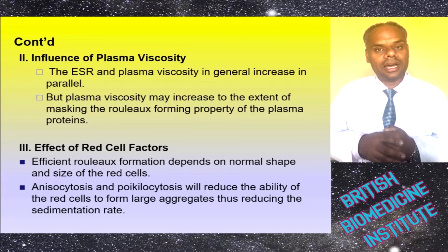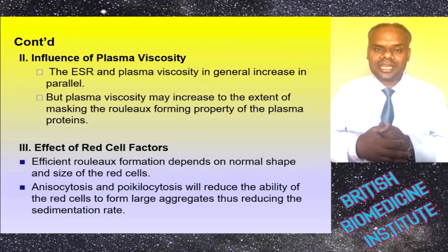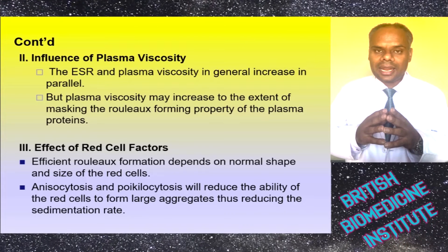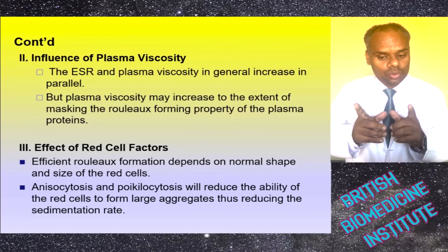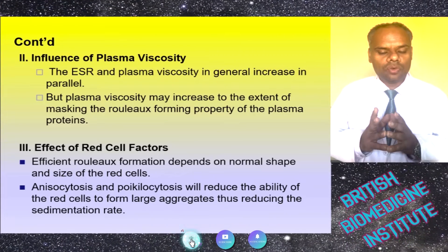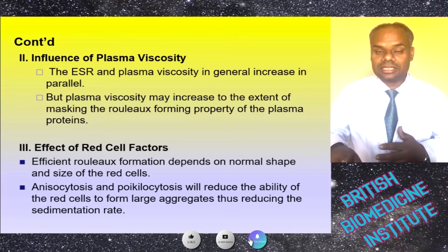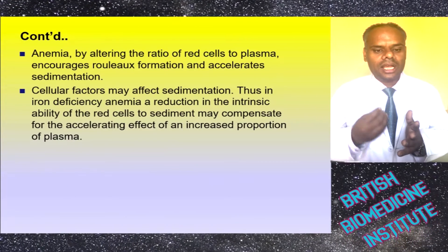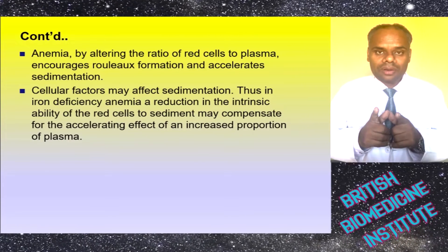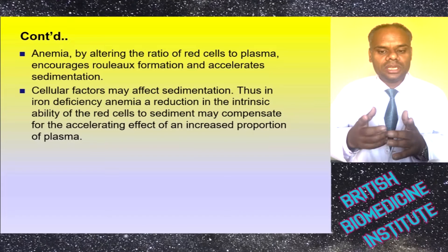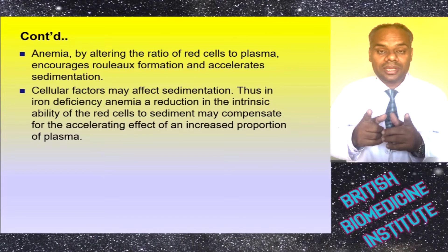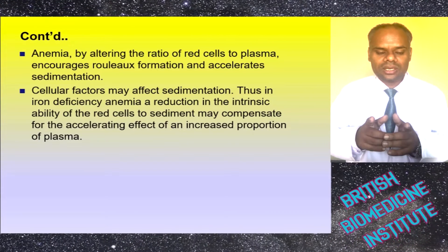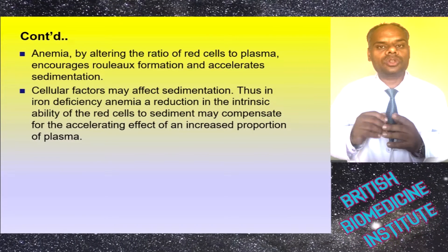The third factor is the effect of RBC factors. Efficient rouleaux formation depends on normal shape and size of red cells. Anisocytosis and poikilocytosis can reduce the ability of red cells to form large aggregates, hence reducing the sedimentation rate. Anemia, by altering the ratio of red cells to plasma, increases rouleaux formation and accelerates sedimentation. In iron deficiency anemia, a reduction in the intrinsic ability of the red cells to sediment may compensate for the accelerating effect of an increased proportion of plasma.